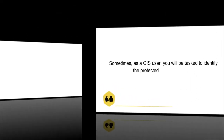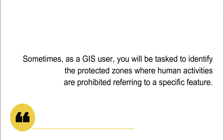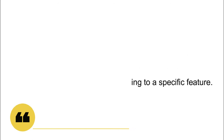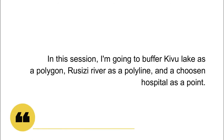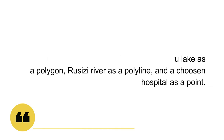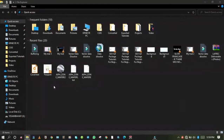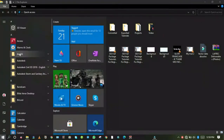Sometimes as a GIS user you will be tasked to identify protected zones where human activities are prohibited, referring to specific features. In this session I'm going to buffer Kivu Lake as a polygon, Rusizi River as a line, and I will choose a hospital as a point.